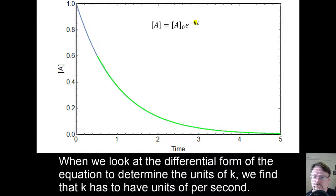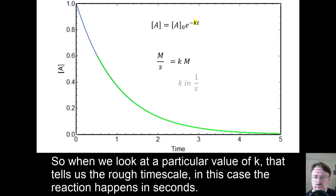When we look at the differential form of the equation to determine units of k, we find that k has units of per second. So when we look at a particular value of k, that tells us the rough timescale. In this case, the reaction happens in seconds.